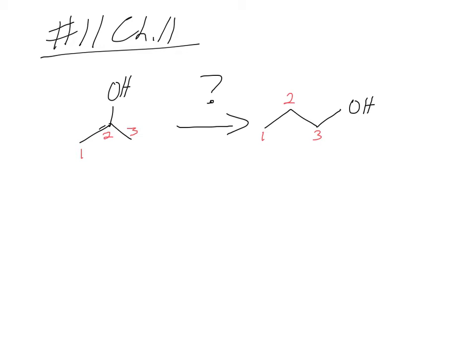So we're going to need to do a retrosynthetic analysis. If we work backwards, we have an alcohol on the less substituted carbon. What starting material would that come from? An alcohol on the less substituted carbon — pi bond where? Between 2 and 3. Do you know how to make an alkene from a secondary alcohol? An elimination, right?